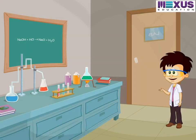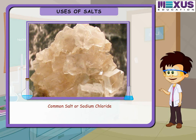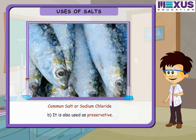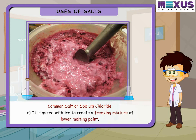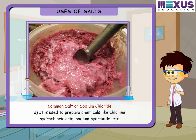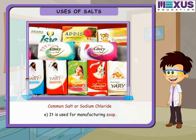Let us have a look at how common these compounds are in our lives. Common salt, or sodium chloride, is added to food for taste and is also used as a preservative. It is mixed with ice to create a freezing mixture of lower melting point. It is used to prepare chemicals like chlorine, hydrochloric acid, and sodium hydroxide.